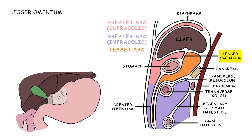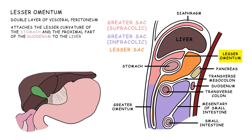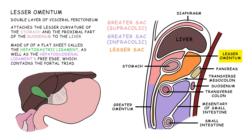The lesser omentum, a double layer of visceral peritoneum, attaches the lesser curvature of the stomach and the proximal part of the duodenum to the liver. It is made up of a flat sheet called the hepatogastric ligament, as well as the hepatoduodenal ligament's free edge, which contains the portal triad.